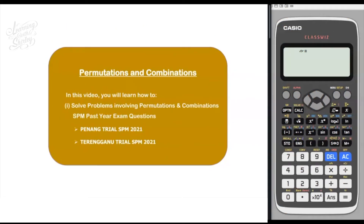In this video, you will learn how to solve problems involving permutations and combinations using SPM past year exam questions from Penang and Terengganu trial SPM 2021 paper. I will also show you how to use the Casio ClassWiz calculator to get your answer fast and accurate.